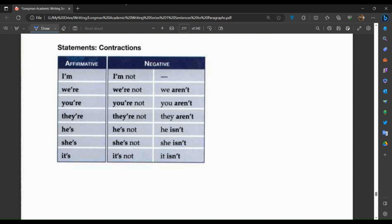I'm, I'm not. We're, we're not. You're, you're not. They're, they're not. He's, he's not. She's, she's not. It's, it's not. Or it isn't, she isn't, he isn't. Two forms of the contraction can happen. I'm not doesn't have any other contraction form. We're not or we aren't. You're not or you aren't. They're not or they aren't. He's not or he isn't. She's not or she isn't. It's not or it isn't.